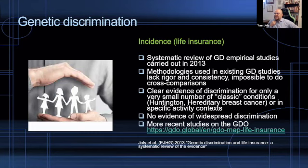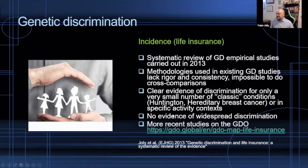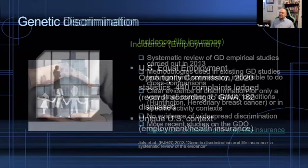We did find clear evidence of discrimination for only a very small number of classic conditions — for example, Huntington's disease, hereditary breast cancer, hereditary colon cancer — or in specific activity contexts. There was no evidence of widespread discrimination from the survey. You can find more recent studies on the Genetic Discrimination Observatory. That's an example of looking at the incidence of genetic discrimination in the field of life insurance.